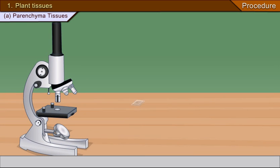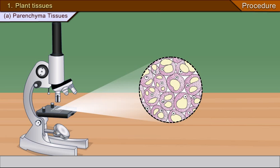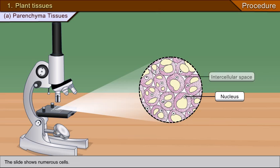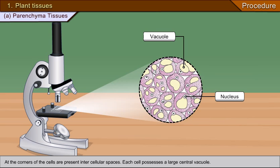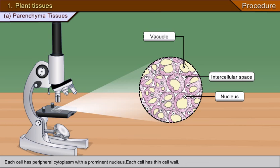Observation 1 — Plant tissues. A. Parenchyma tissues: The slide shows numerous cells. The parenchyma cells are isodiametric, meaning almost all cells are equal in length and width. At the corners of the cells are present intercellular spaces. Each cell possesses a large central vacuole, peripheral cytoplasm with a prominent nucleus, and a thin cell wall.